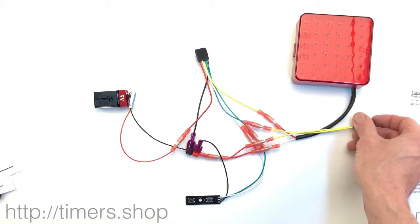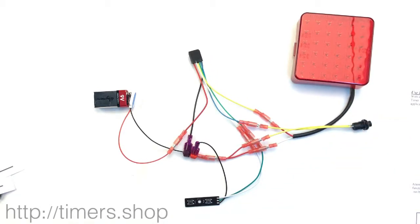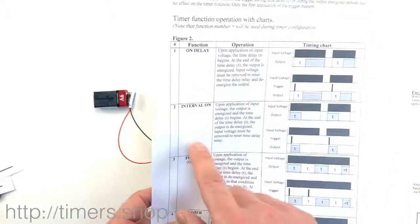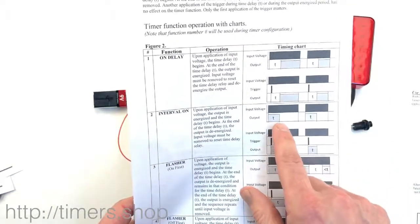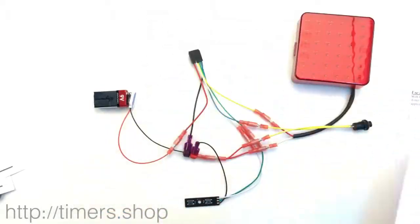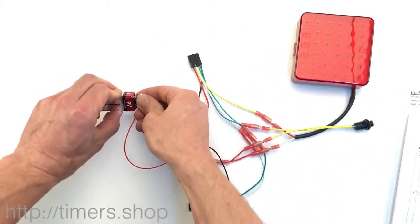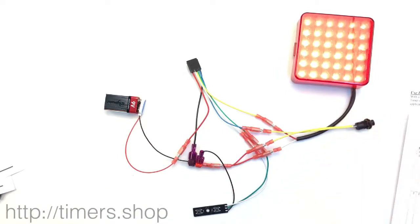If we push the button one more time, it doesn't come on because we set up the timer to function 2, and it only works once per power cycle. So if we remove the power and connect it back, then it will work one more time.